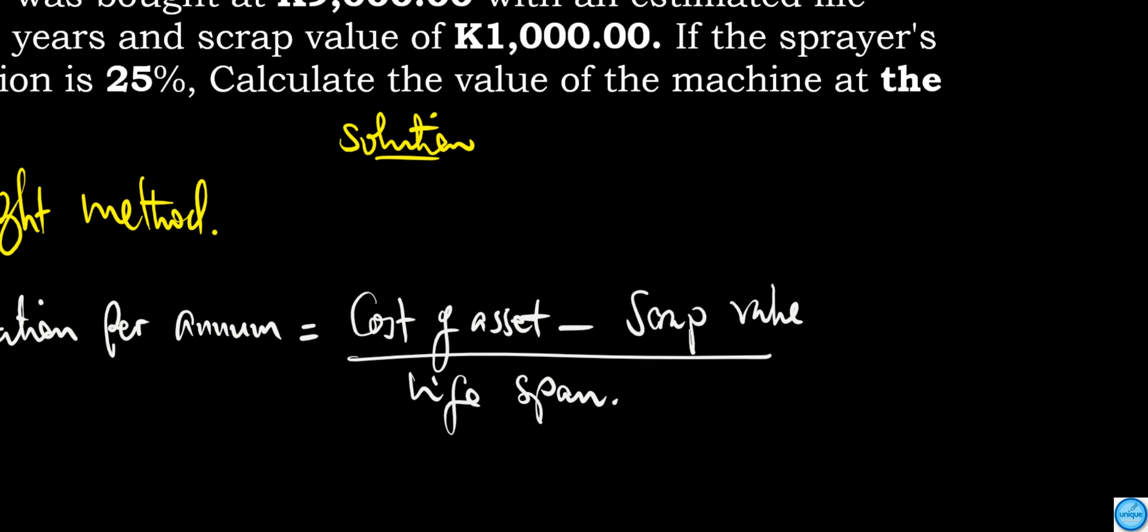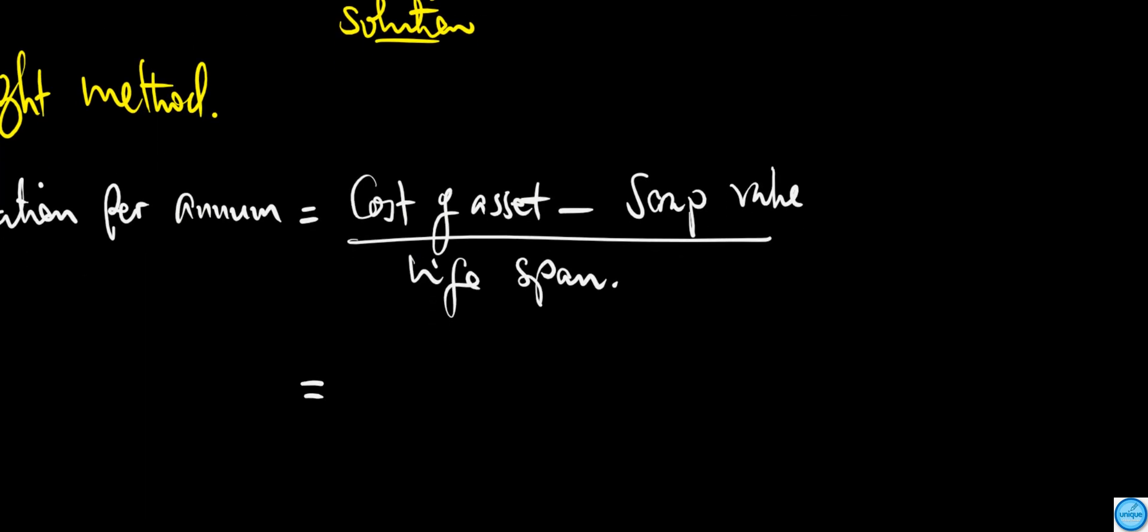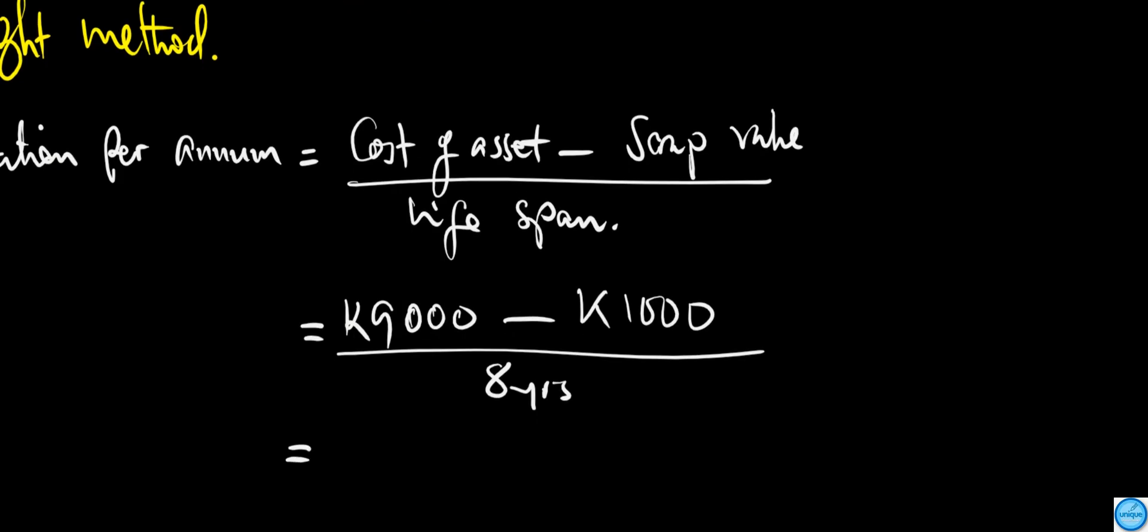The cost of the asset according to the question is K9,000, and the scrap value after 8 years is K1,000. So it's K9,000 minus K1,000, which is K8,000, divided by 8 years. The answer is K1,000 per annum.